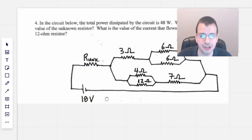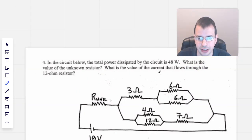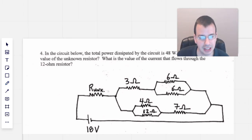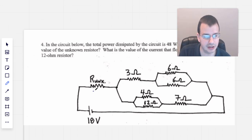In the circuit below, the total power dissipated by the circuit is 48 watts. What is the value of the unknown resistor? What is the value of the current that flows through the 12-ohm resistor? So basically we want to find this value and the current flowing through that resistor.